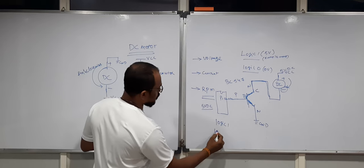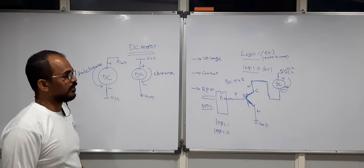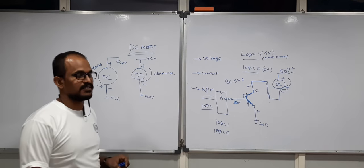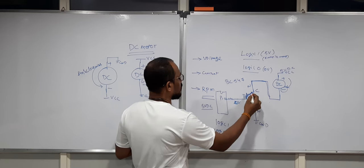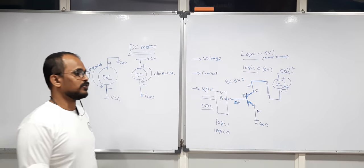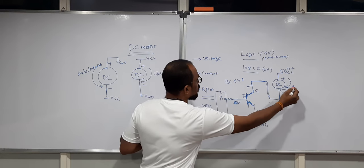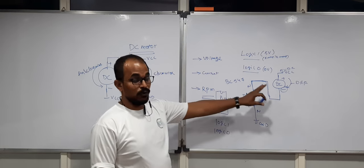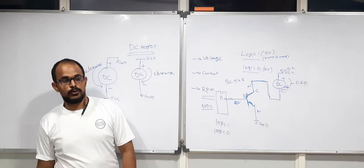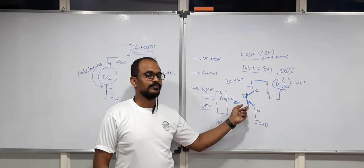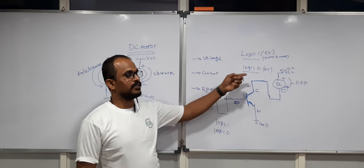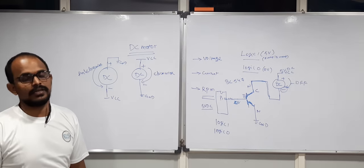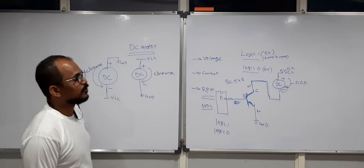If you make logic 0 from the program, the base gets no positive supply, so the transistor goes to open state — collector and emitter are open. When the transistor is open, the DC motor goes to off state. This is how you can drive a simple 5V toy DC motor with a transistor: logic 1 rotates it clockwise, logic 0 turns it off.